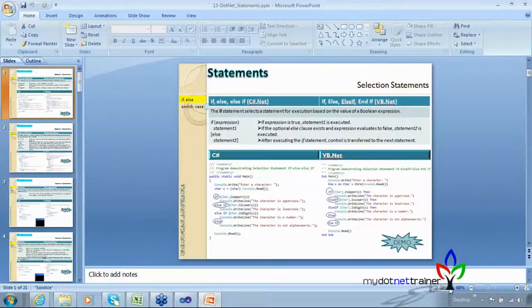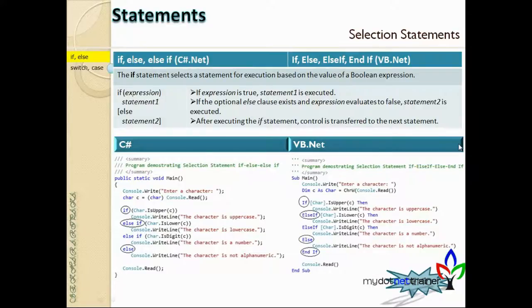The first thing is the selection statements. Statements are categorized into six groups and we'll go one by one. The first category is the selection statements, under which we have two statements. The first one is if-else. In C-Sharp we have if, else, else-if, whereas in VB.NET it's if, else, else-if, and end-if.